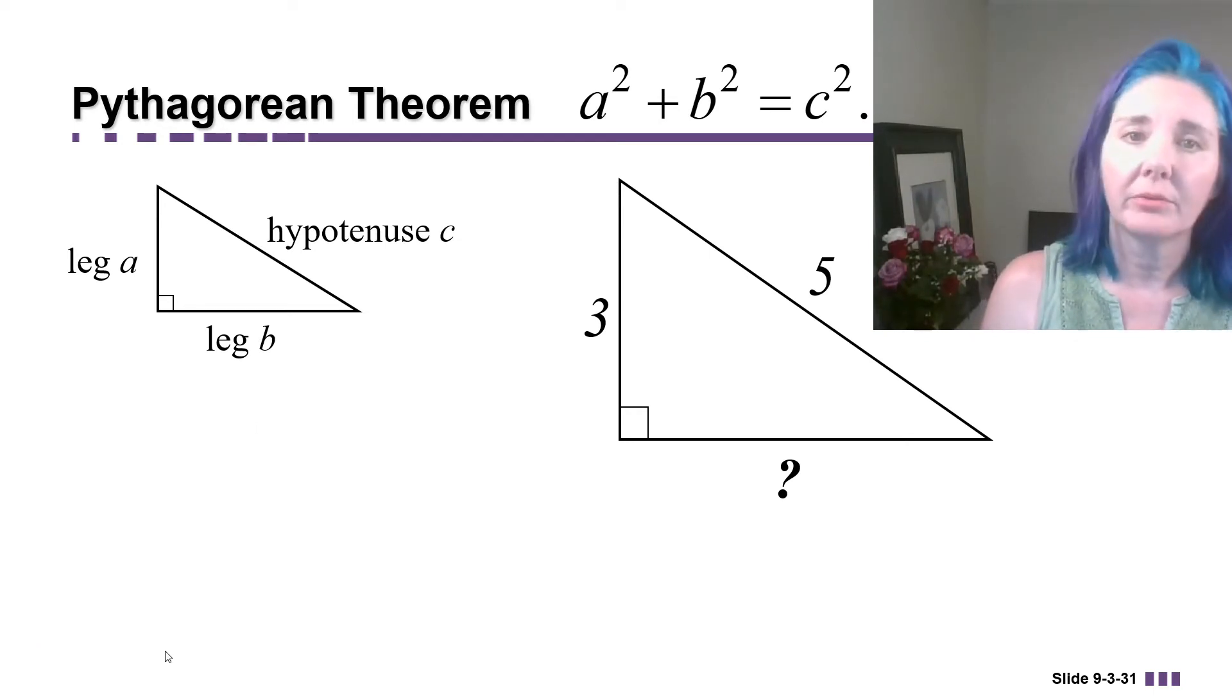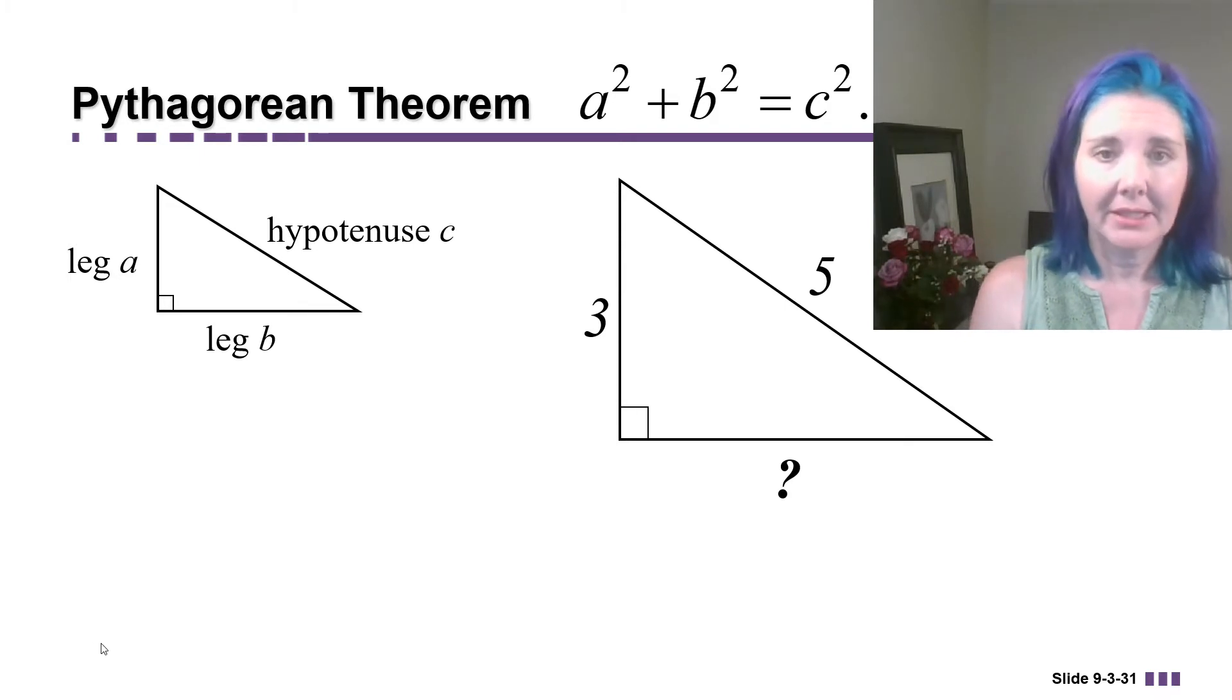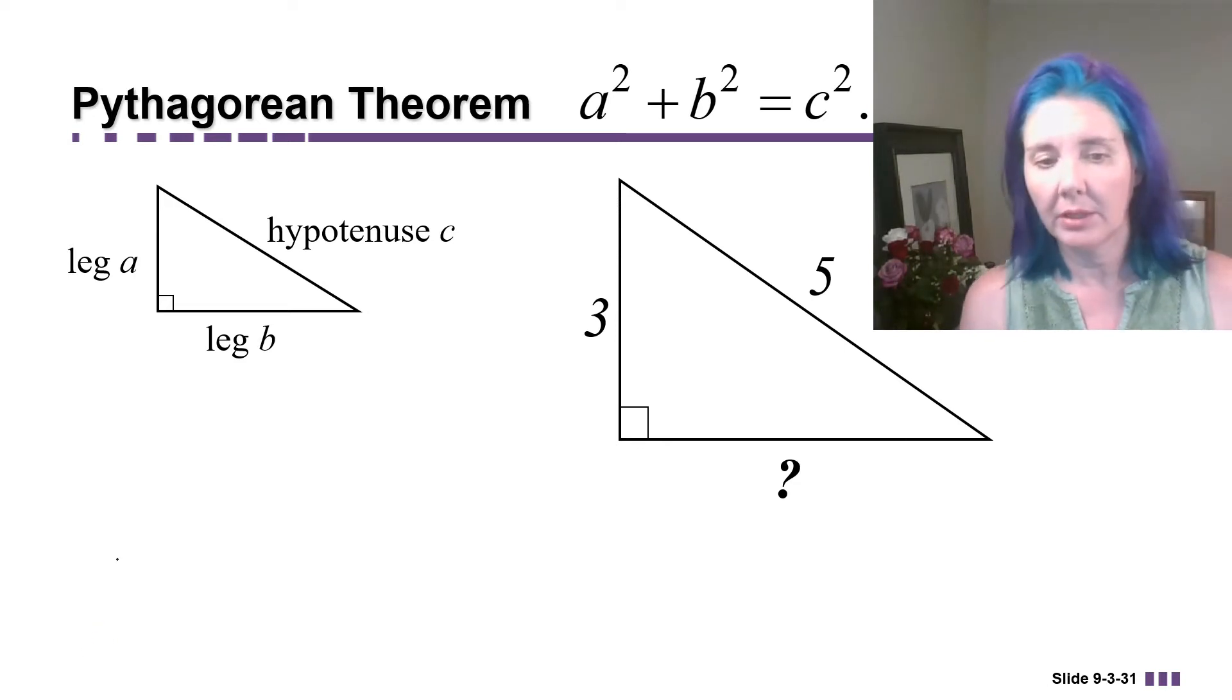So here we have a right triangle where one leg is length 3, and the hypotenuse is length 5, and we're looking for the other leg. Now it's important to know which side is missing because there's a difference between finding a leg and finding the hypotenuse. Here's what I mean.